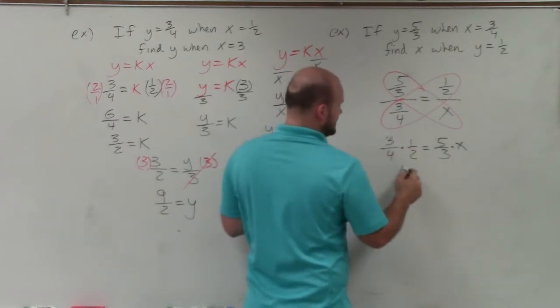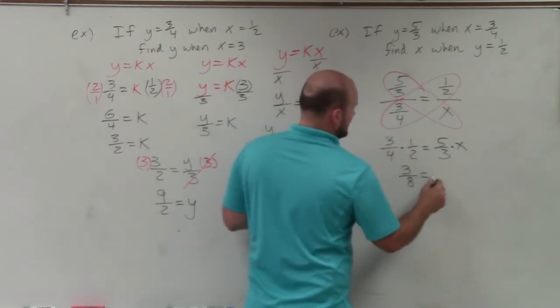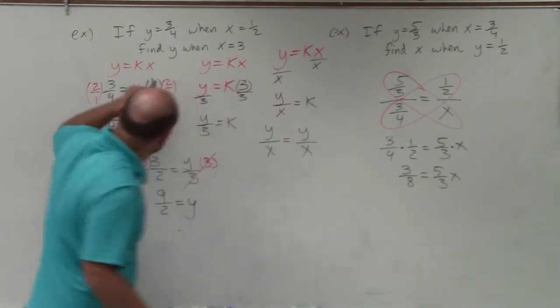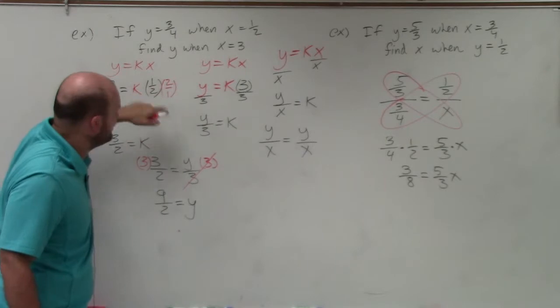Now I just multiply fractions across, so that becomes 3 eighths equals 5 thirds x. Now again, how do you get rid of, when you have a variable multiplied by a fraction, how do you get rid of it?